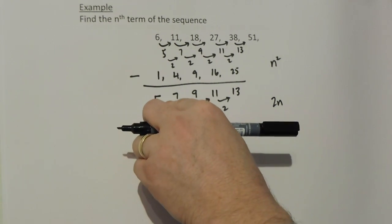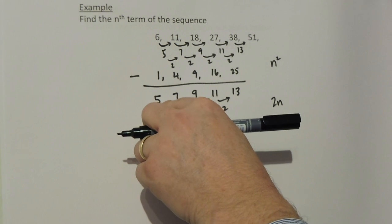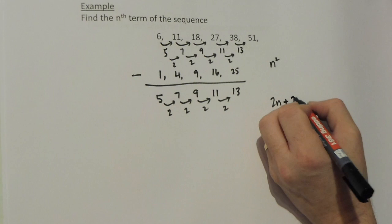However, the 2 times table starts with a 2, not a 5. So therefore, I need to add 3 to 2 to get 5. So I need to add 3.